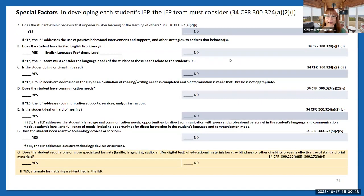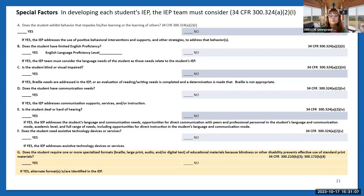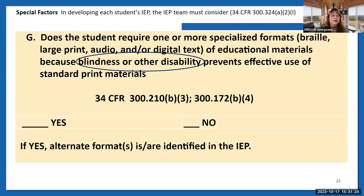Now we're talking about accessible educational materials in your IEP. When you hit your special factors page — and I know we have at least six different programs used for IEPs in our state — part G is the part where we talk about accessible materials. It asks: 'Does the student require one or more specialized formats — Braille, large print, audio, and/or digital text — of educational materials because of blindness or other disabilities preventing them from the use of standard print materials?' This used to be a confusing section — people just thought you had to be blind or visually impaired. That is not the case.